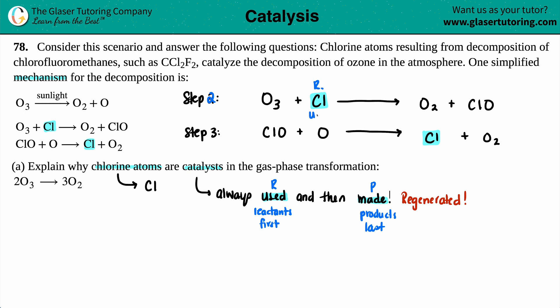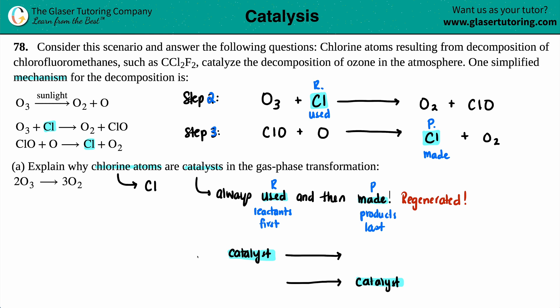So the Cl was used. And then in the later step, it is on the product side — so it was made. A catalyst will always be used up on the reactant side first, and then it will be made on the product side. So explain why the chlorine atoms are catalysts: the Cl atoms are used first and then made.